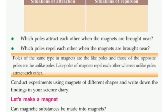Poles of the same type in magnets are the like poles, and those of the opposite poles are the unlike poles. Like poles of magnets repel each other, whereas unlike poles attract each other.